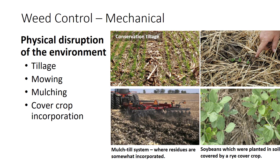Mowing is one of the most common mechanical control methods and is more effective on annual broadleaf weeds. Mulching, plastic covers, and cover crop incorporation can lend to suppression of weed seedling emergence by reducing light penetration to the soil surface, thus inhibiting seedling growth. Mulches and plastic coverings are usually limited to gardens and high-value systems like plant propagation and tomatoes.